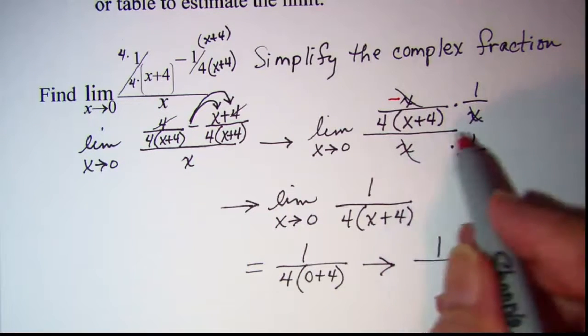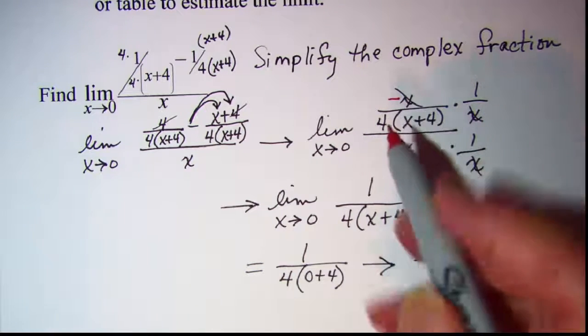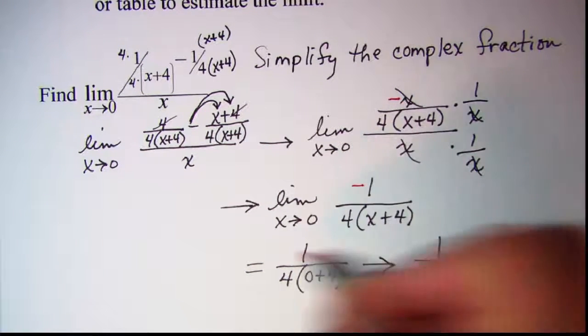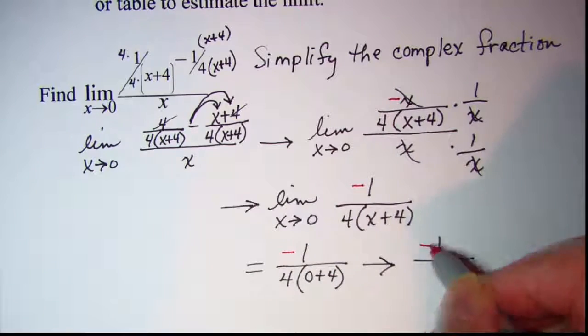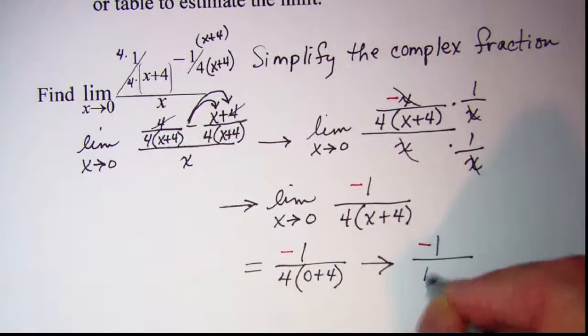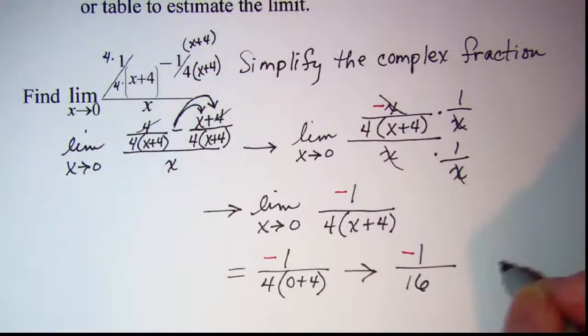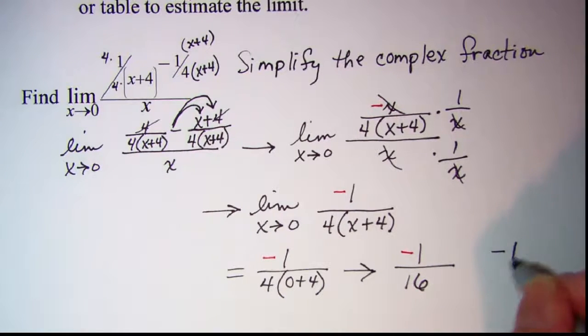And then the x is still canceled, but I have a negative 1 here, and here, and here. And then 4 times 4 is 16. So my answer is negative 1 sixteenth.